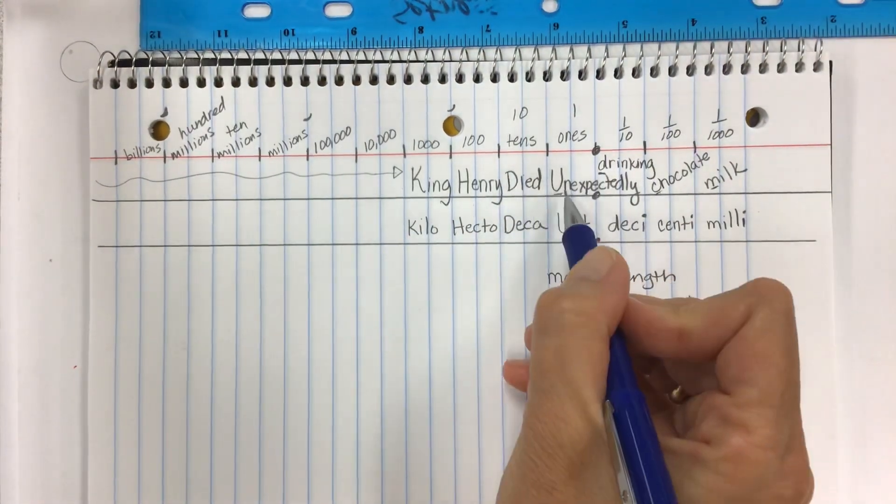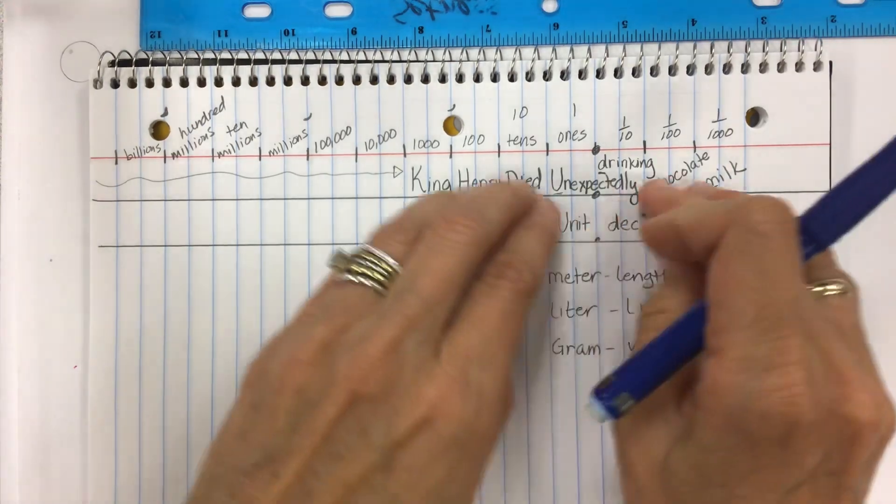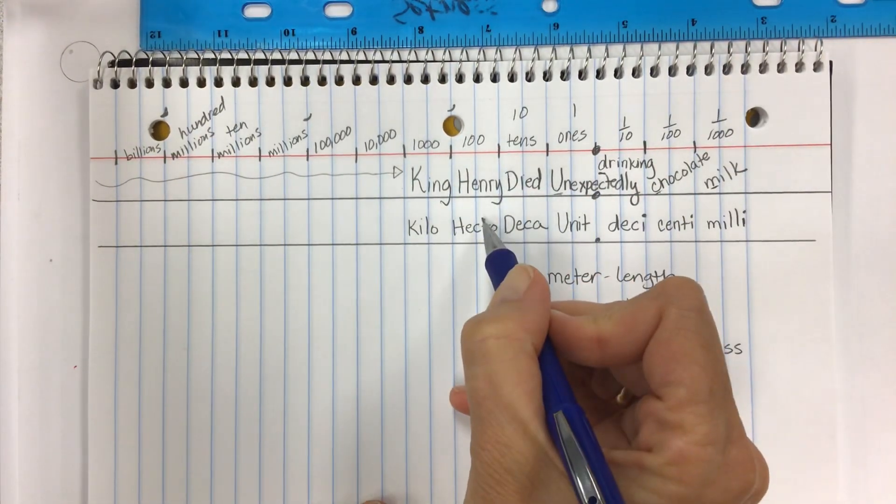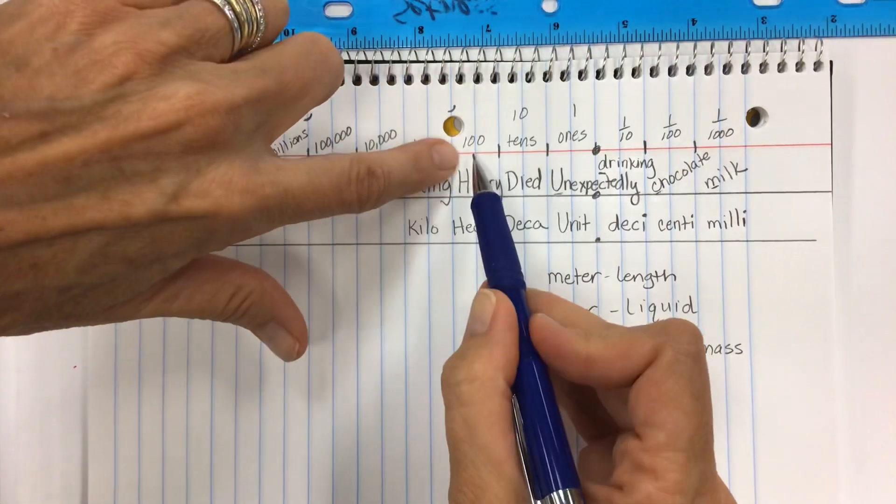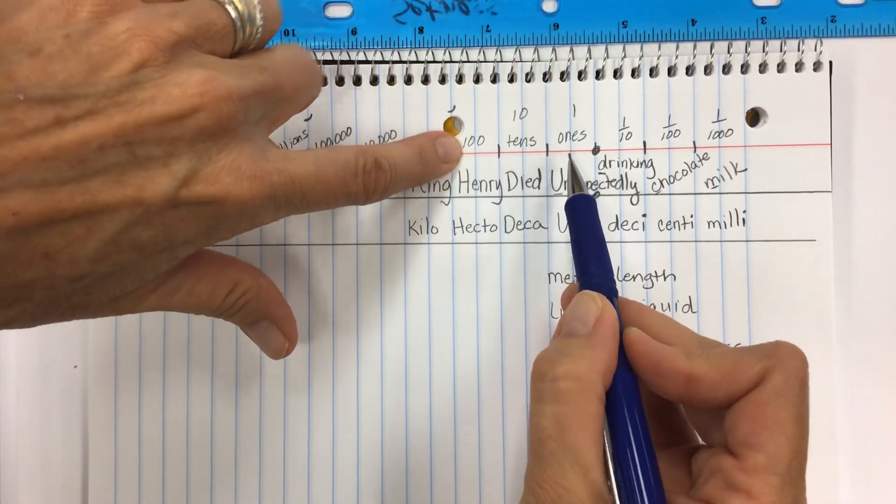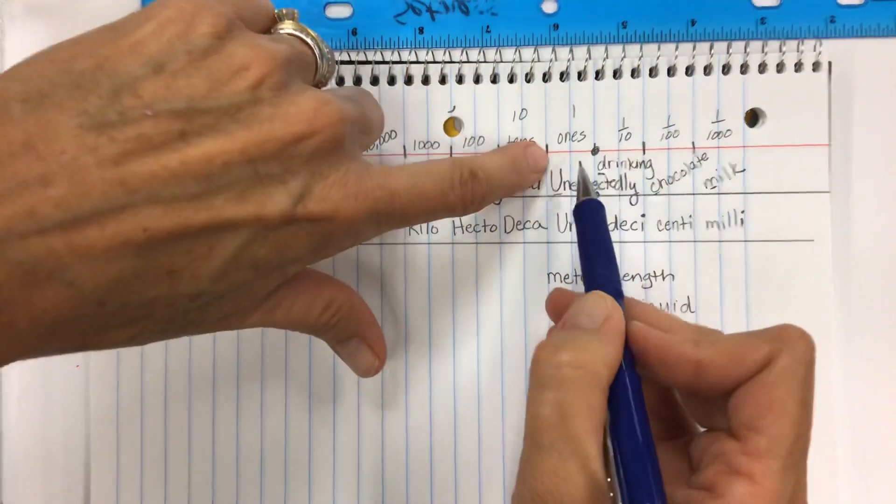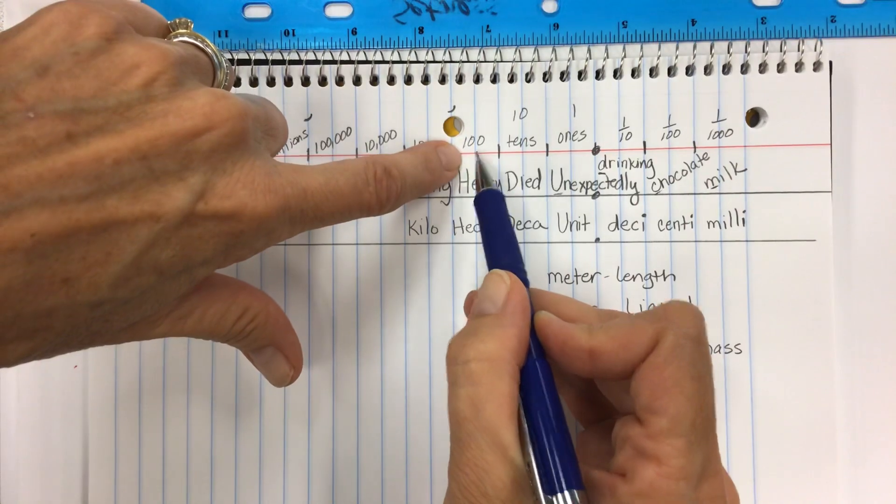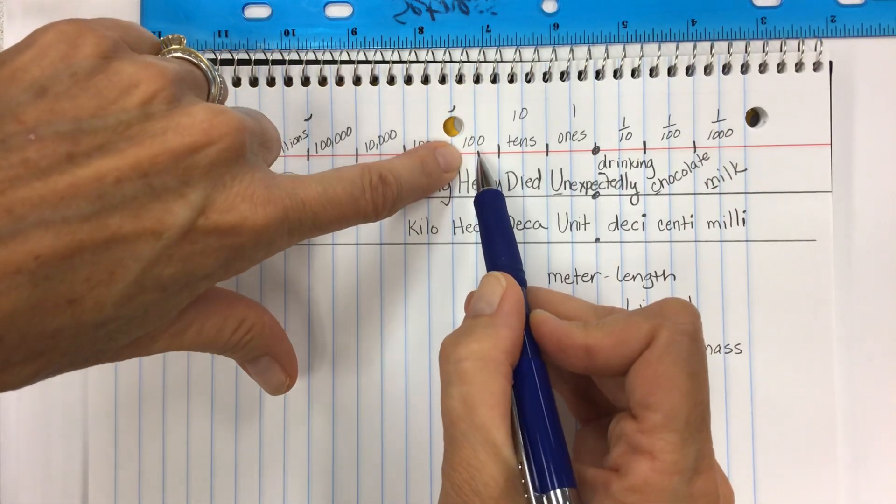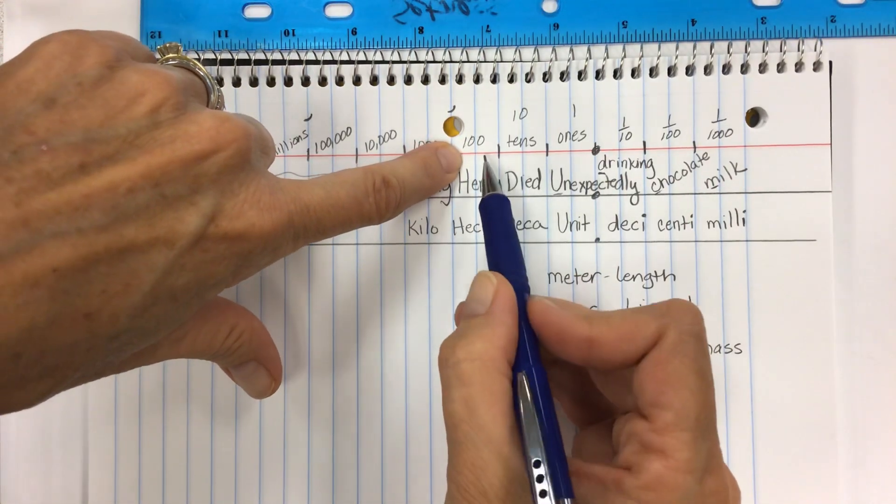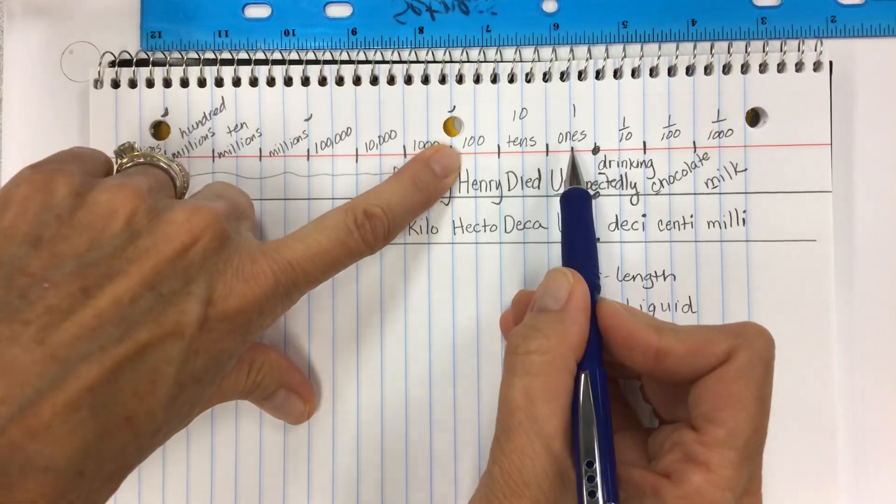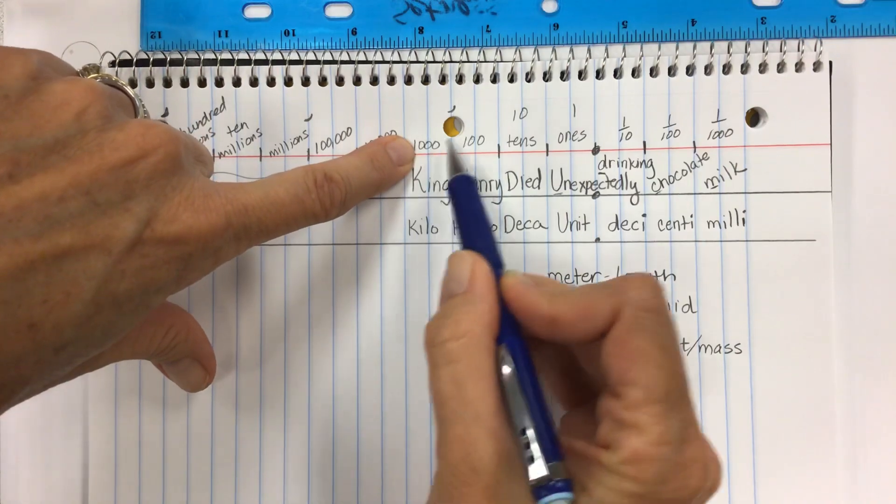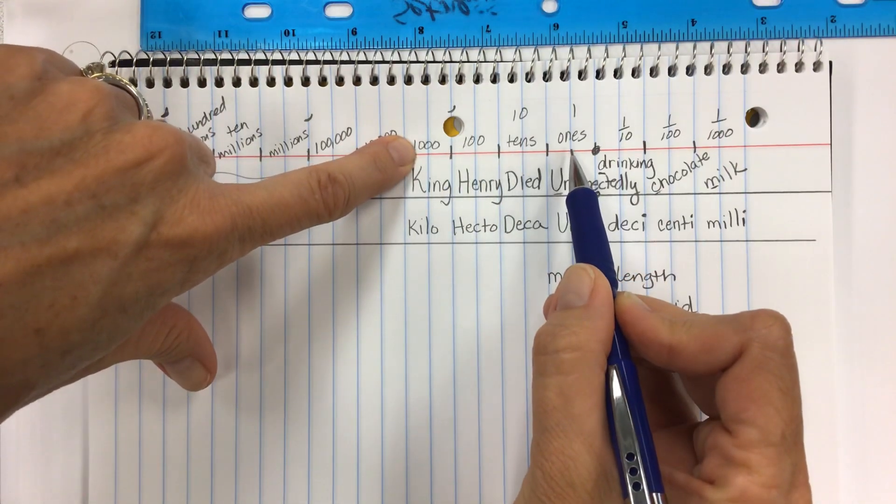If you go to the left this digit is 10 times the value of this one. Now if one jump means a difference of 10, then in the same way you can do two jumps, that would be 100 times larger. This number here is a hundred times larger than this digit here. So if I have a two in the ones place and then I multiply it by a hundred I'm going to have 200, so two in the hundreds place has a hundred times the value of the two in the ones place. Likewise a two in the thousands place has a thousand times the value of a two in the ones place.